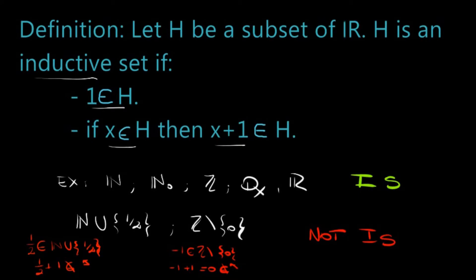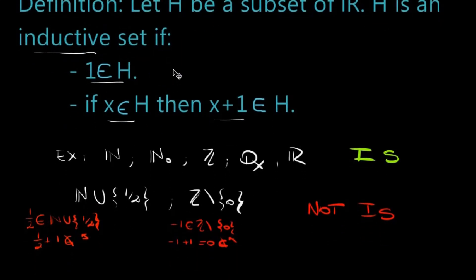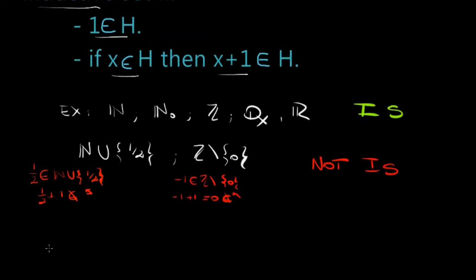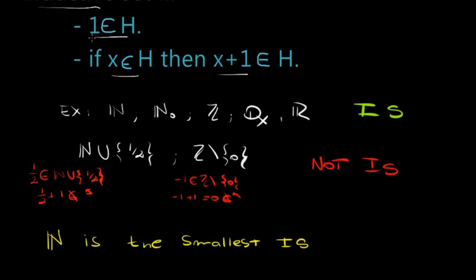With this, we can easily realize that N, the set of the natural numbers, is the smallest inductive set. Because if 1 belongs to N and there are no extra elements — I'm not adding 1/2 and needing all the plus 1s — this is actually a proof you can do as an exercise, but it's not hard to actually believe it.